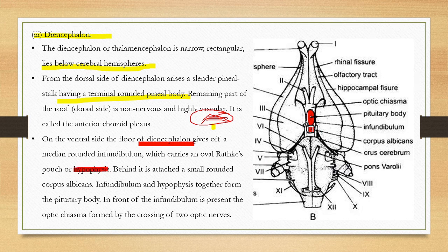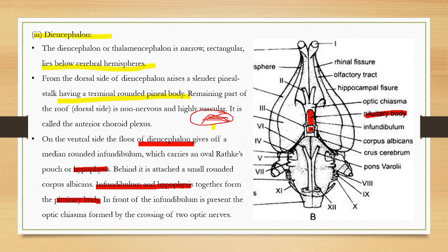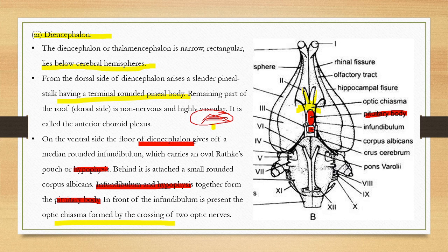A small rounded structure called corpus albicans is also present. The infundibulum and hypophysis together are called the pituitary body. In front of the infundibulum, the optic chiasma is present, which is formed by the crossing of the two optic nerves from the left side and right side.